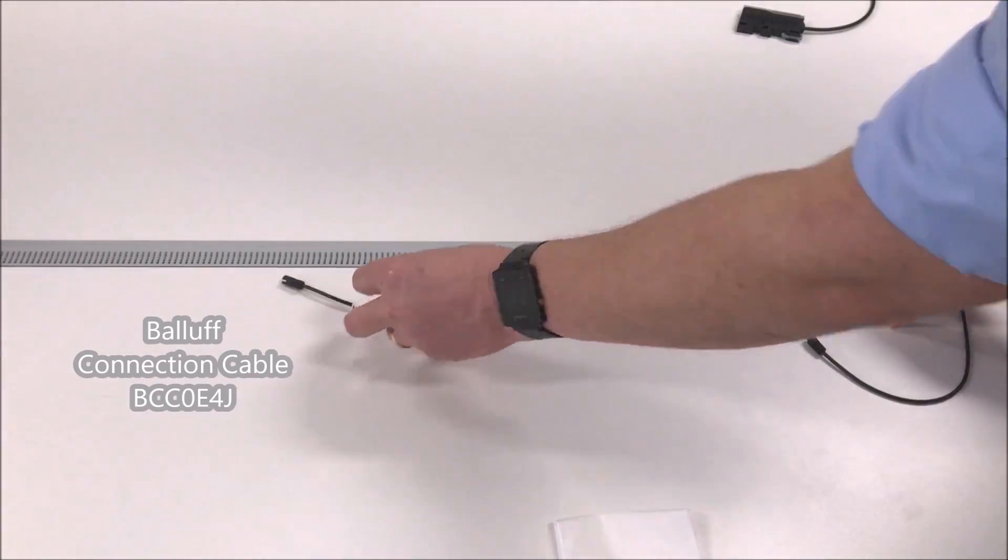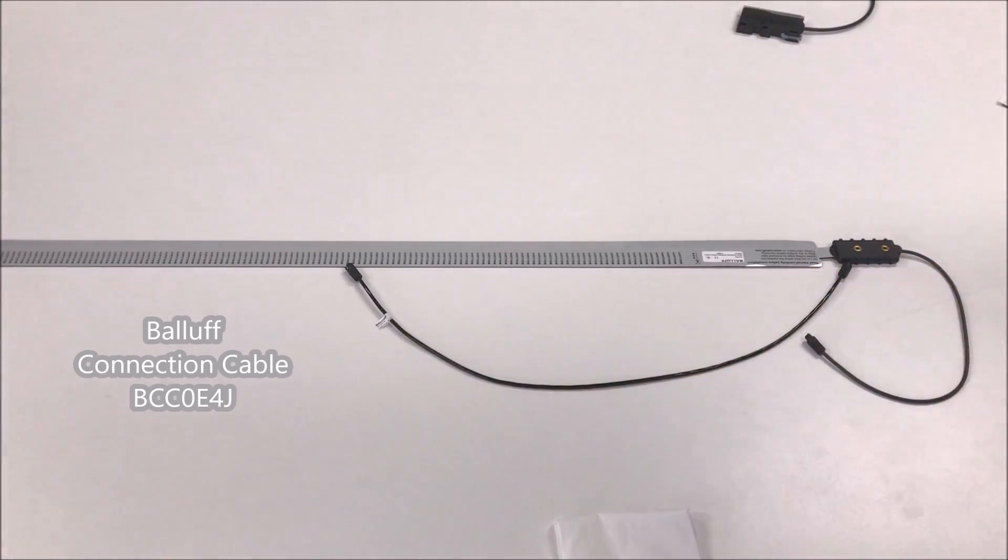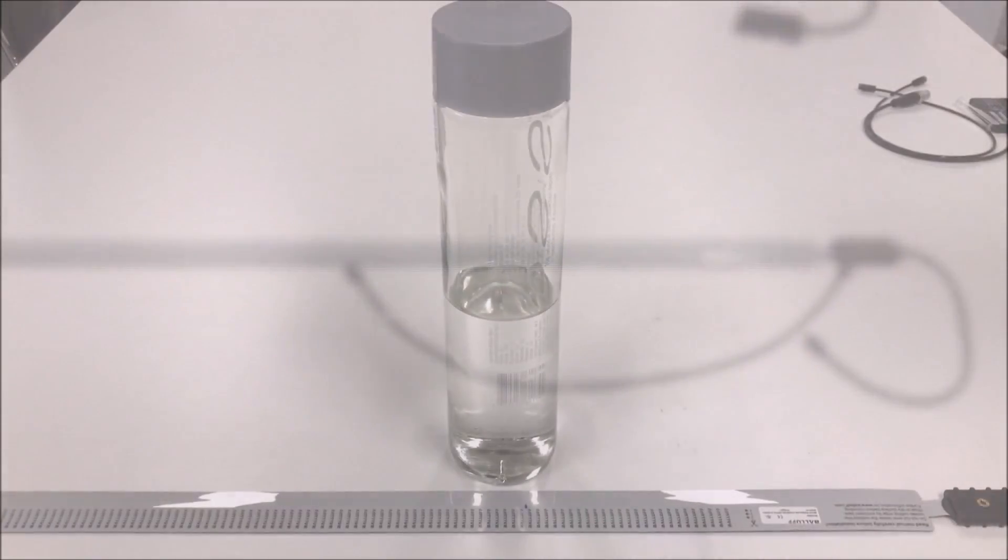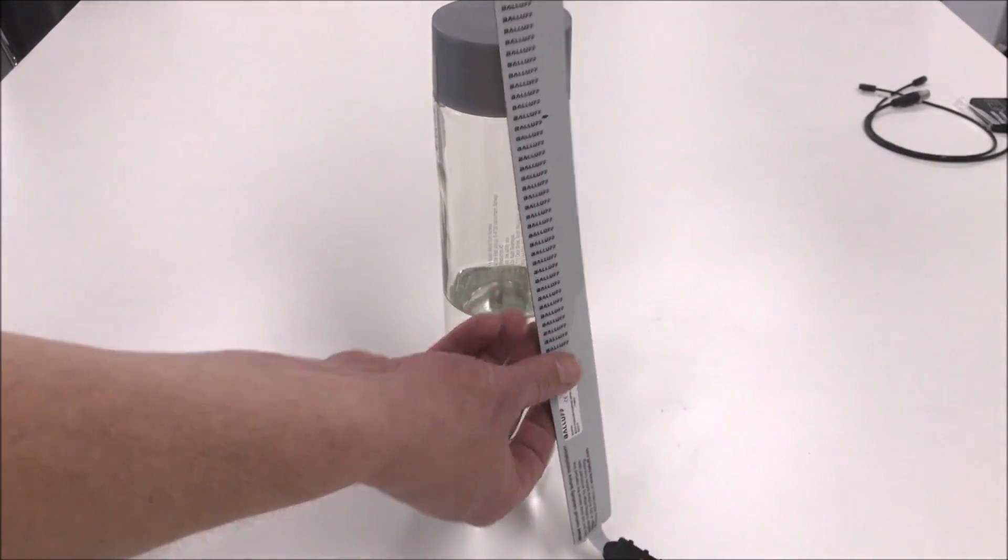The sensor tape can be directly connected to the amplifier or extension cables in various lengths from 0.5 to 8m can be used if you wish to install the amplifier remotely. For a demonstration we will fix the sensing tape onto a glass bottle.